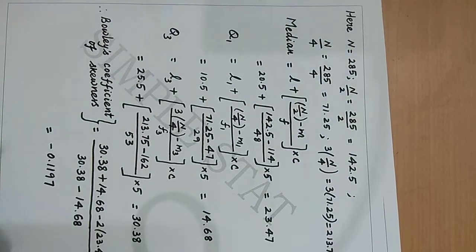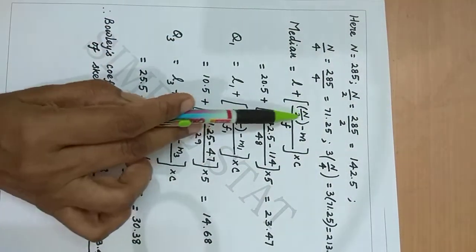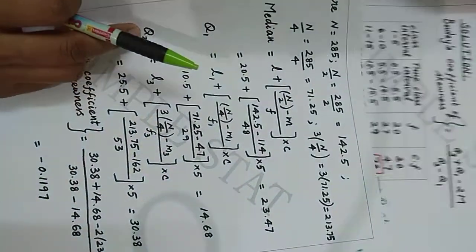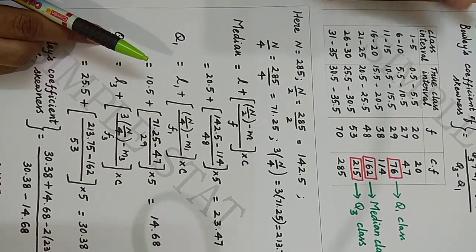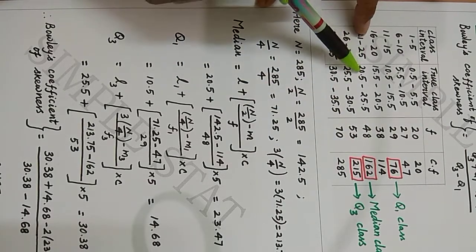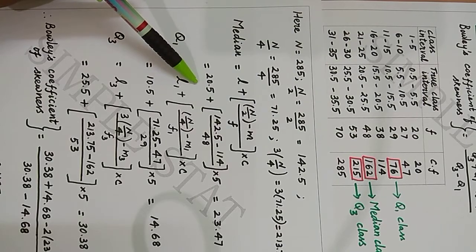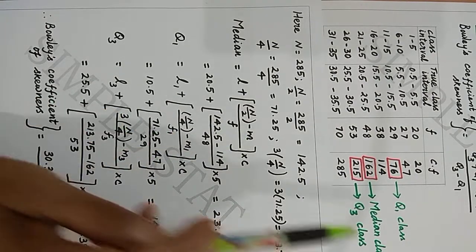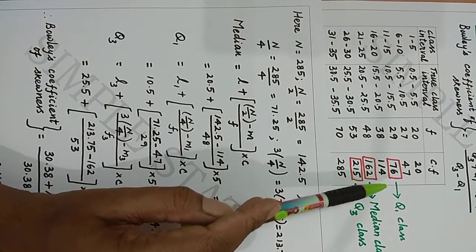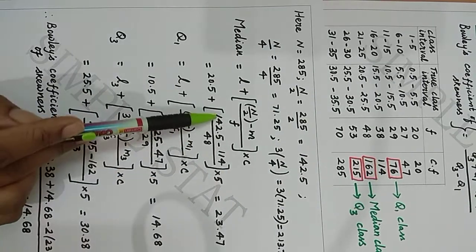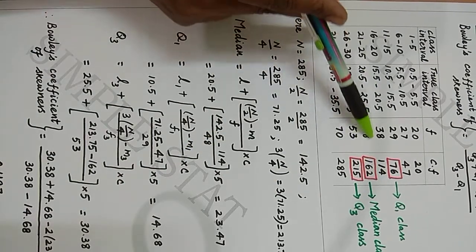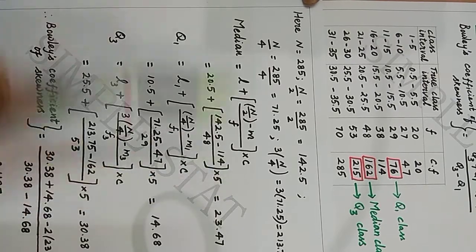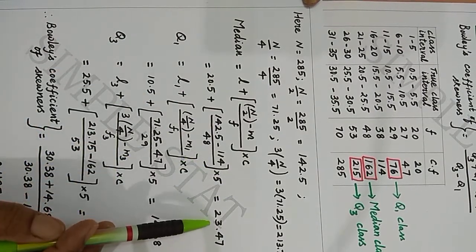Median is given by L + (N/2 - M) / F × C, where L denotes the lower limit of the median class. The median class is 162, hence the lower limit of the median class is 20.5. N/2 is 142.5. M denotes the cumulative frequency of the pre-median class; since the median class is 162, the cumulative frequency of the pre-median class is 114. F denotes the frequency of the median class, which is 48, and C denotes the width of the uniform class interval, which is 5. Substituting all these values and simplifying, we get median = 23.47.